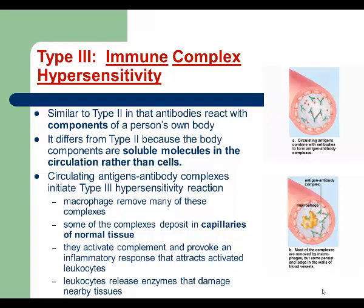In everyday life, we are always exposed to different types of antigens. Looking at this picture, you can see the red dots — those are examples of antigens inside a blood vessel. Every time we get exposed to foreign antigens, our immune system makes antibodies. Antibodies come into the bloodstream, recognize their antigens, and start forming antigen-antibody complexes. Macrophages are then supposed to come and remove those complexes — this is what happens when our immune system works correctly.